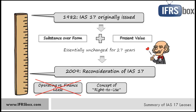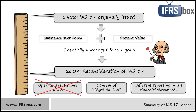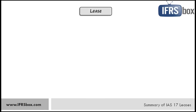Also, lessors and lessees will show the leases differently in the financial statements. Of course, there will be some exceptions, such as operating leases for less than 12 months. That's really the picture of the new IAS 17 from a high level, but I will come back to that when it's issued as the new standard. Now let's take a look at the current IAS 17 and summarize its main principles and requirements.